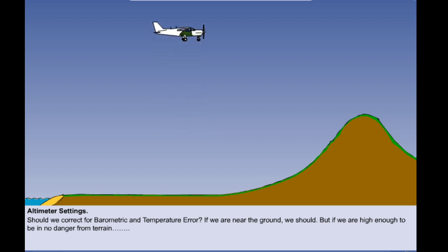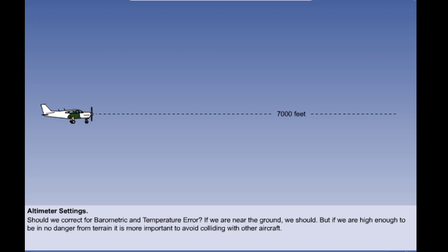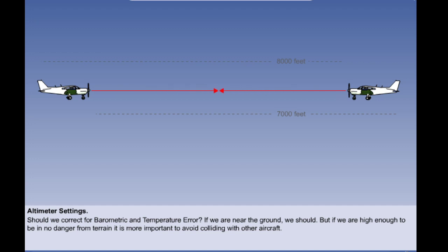But what if we are high enough to be in no danger from terrain? In this case it is more important to avoid colliding with other aircraft — we require vertical separation. One aircraft could be told to fly at 7,000 feet whilst another is told to fly at 8,000 feet. However, suppose one aircraft has corrected for barometric and temperature error at a departure airport where the sea level pressure and temperature are lower, and another has corrected where they are higher. Their true altitudes will differ depending on what each has set, creating a danger of collision unless both aircraft use the same datum pressure and deal with temperature error the same way.